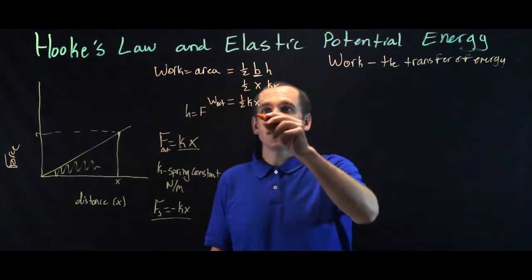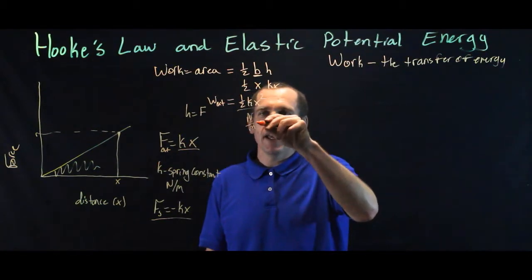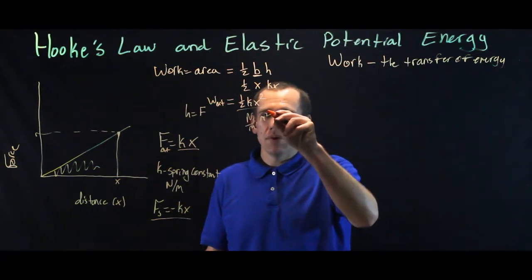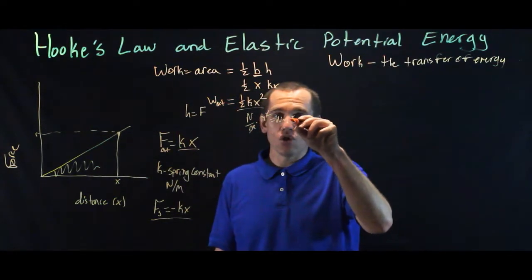Now, if we look at the unit for one-half kx squared, k is newtons per meter times x, which is meters squared. And we can see that square cancels that meter. And we are left with newtons meters, and this is a joule.